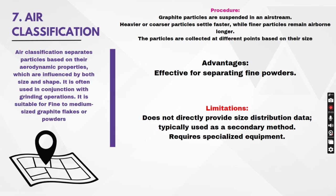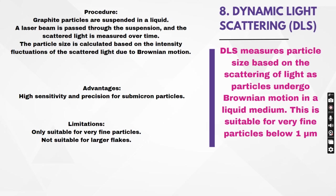Air classification separates particles based on their aerodynamic properties, which are influenced by both size and shape. It is often used in conjunction with grinding operations and is suitable for fine to medium sized graphite flakes or powders. Particles are suspended in an airstream — heavier, coarser particles settle faster while finer particles remain airborne longer, and particles are collected at different points based on their size. While effective for separating fine powders, it does not directly provide size distribution data and requires specialized equipment, making it typically a secondary method.